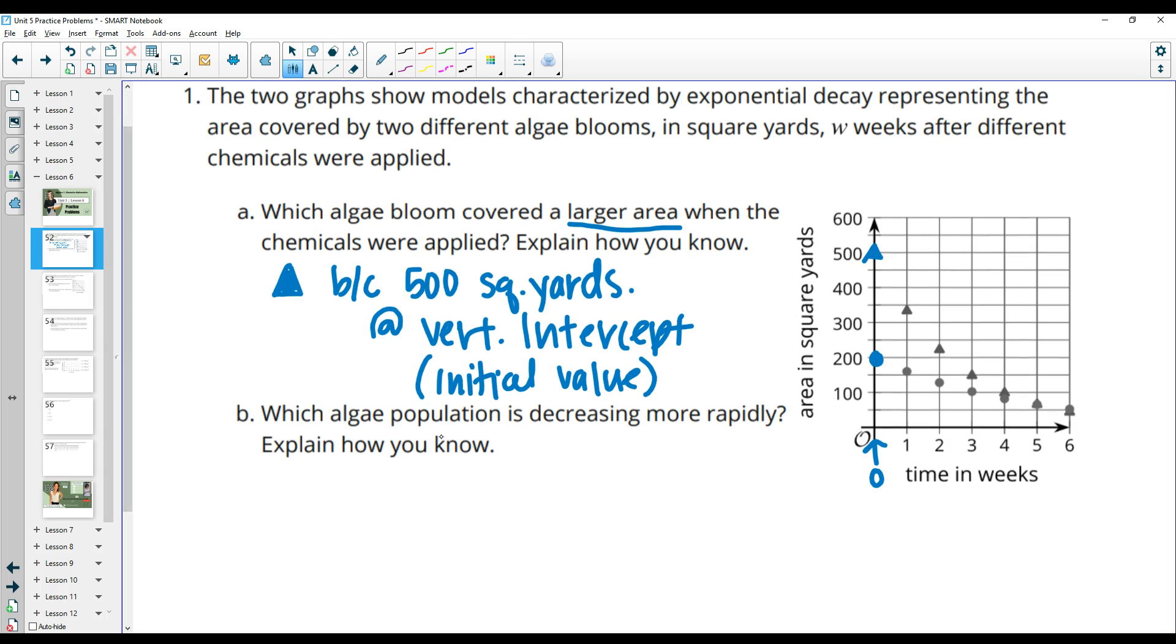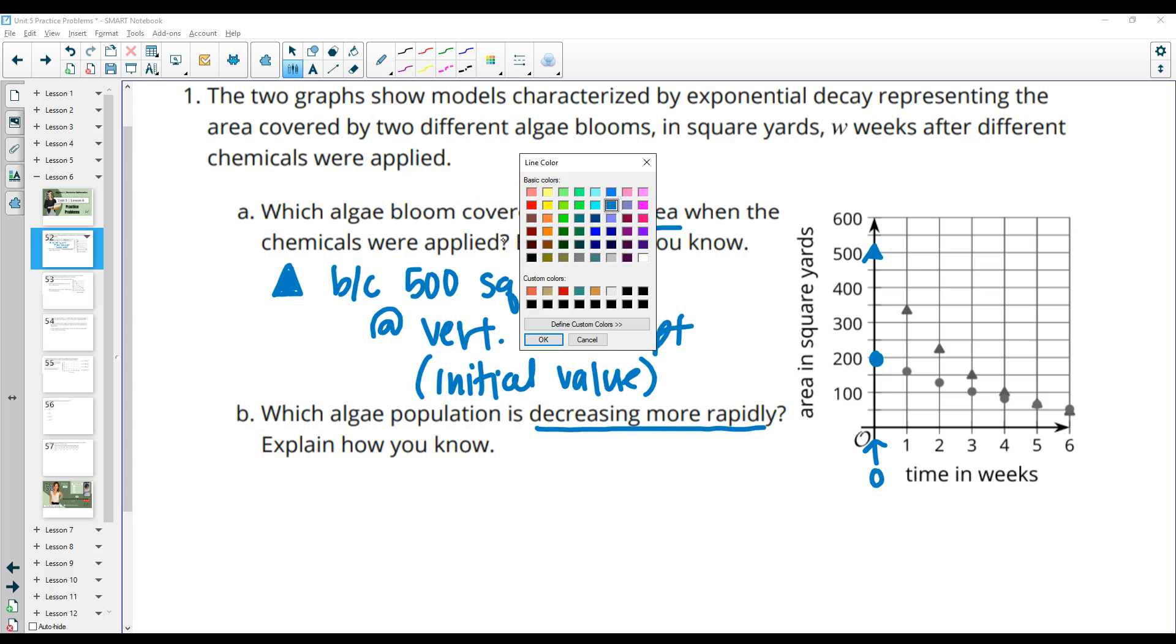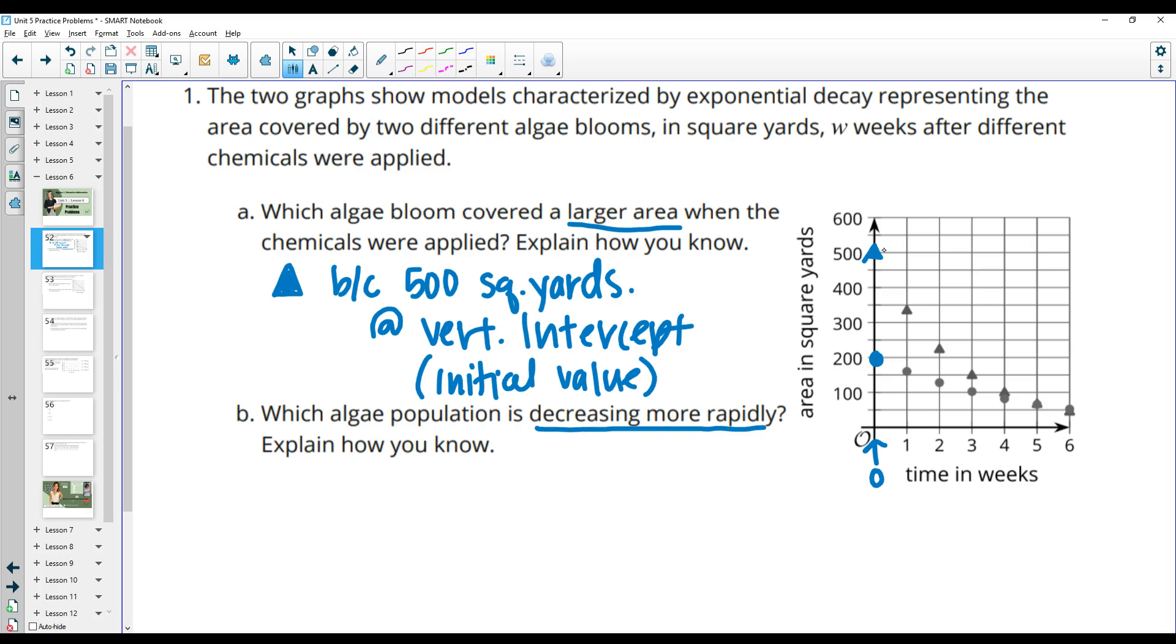Part B says which algae population is decreasing more rapidly and explain how you know. So this is when we look at the kind of gap here between these two. This vertical gap here, we go from 500 down to maybe like 340. And this one, the vertical gap is much smaller. We're going from 200 to over 150. So this one is decreasing by like a quarter of its size, where this one is decreasing by more than that.